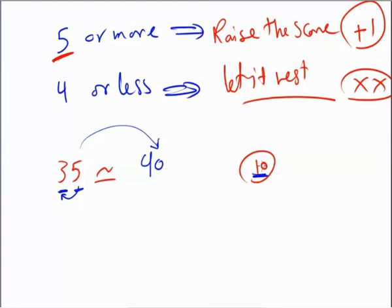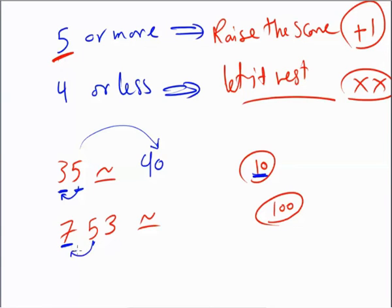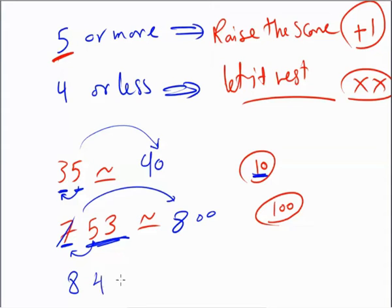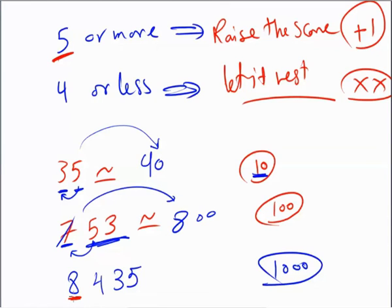Another example: 753 approximated to the nearest hundred. The hundreds digit is 7. Before it is 5 — five gives — so 7 becomes 8, and change remaining digits to zeros: 800. Another one: 8,435 approximated to the nearest thousand. The thousands digit is 8. Before it is 4 — four or less, so keep it as 8 and change all other digits to zeros. The answer is 8,000.